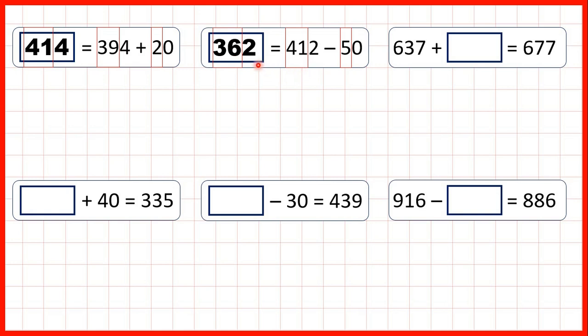Now 637 plus something equals 677. So here we can see that it's only the tens digit that's changed. Now whenever we have a missing number addition, we can always use subtraction to find our missing number. So we could work out 677 minus 637.